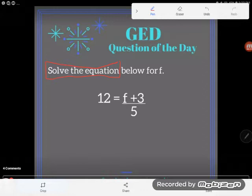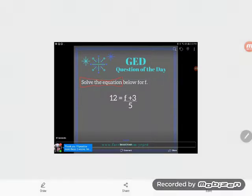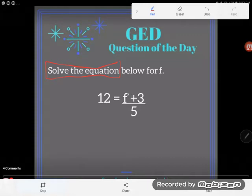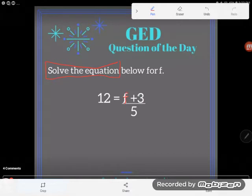This is a two-step equation. The way I can tell that is because I see this letter here, f, and I see two numbers hanging out with f. There's this 3,